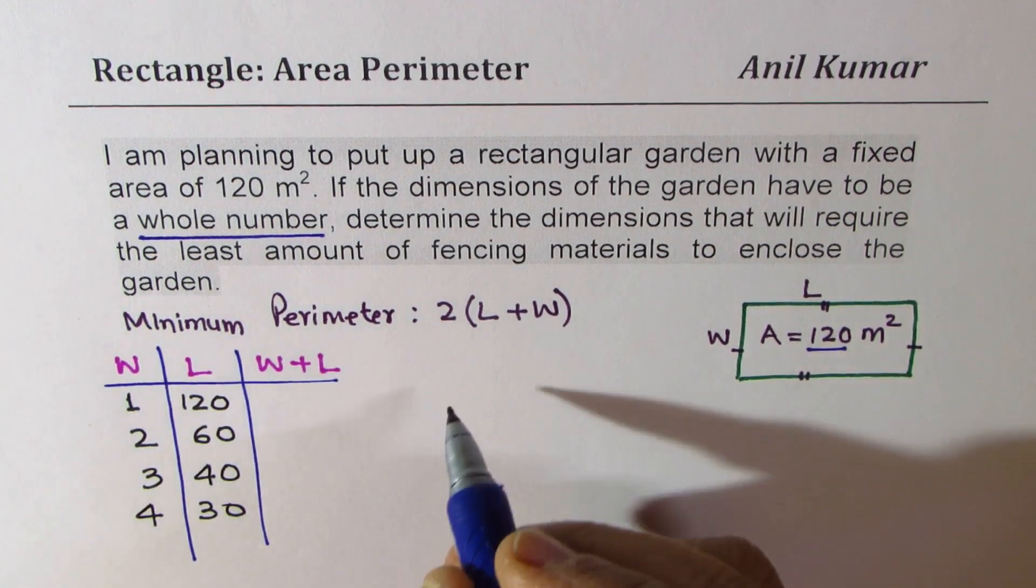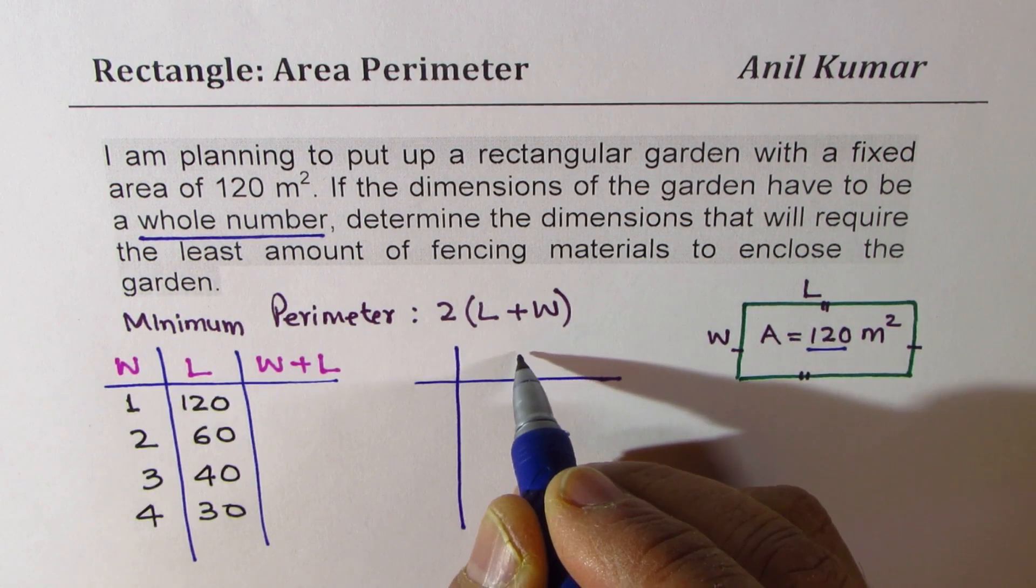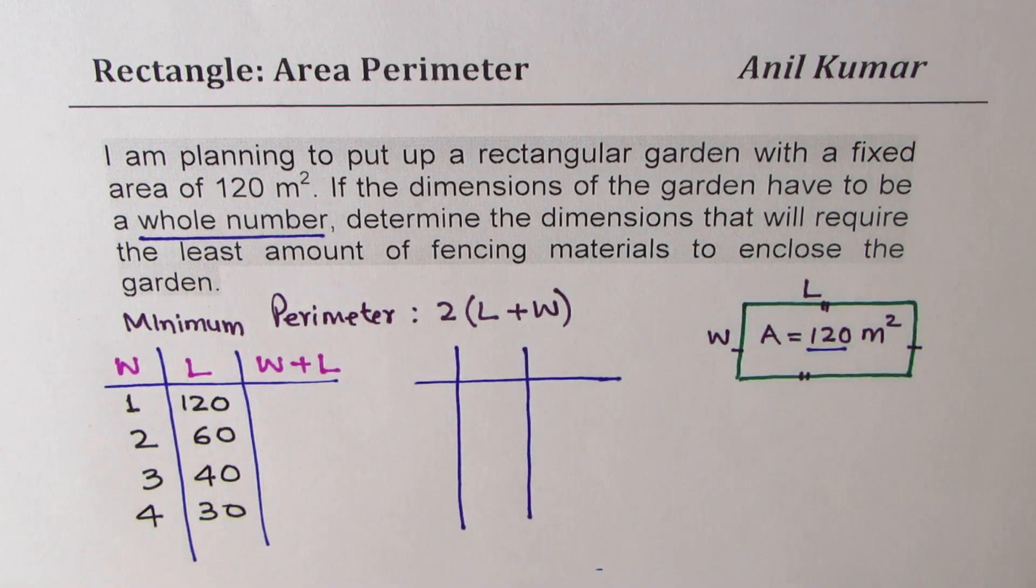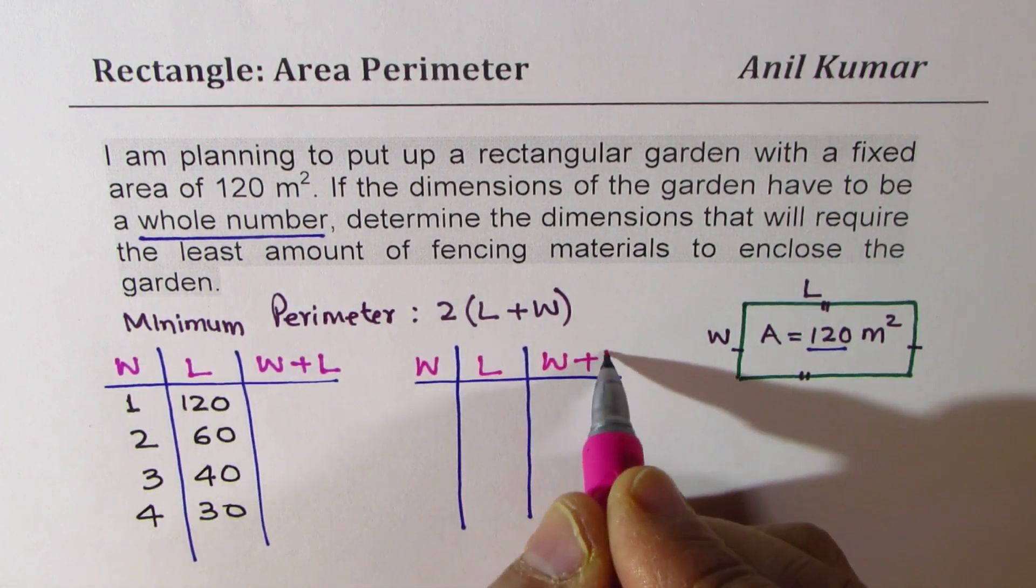Let's try some other values also. Let me make another table. There are not many options, so this method is not bad. So we'll again take some more values for width and length, and we'll calculate what is width plus length.